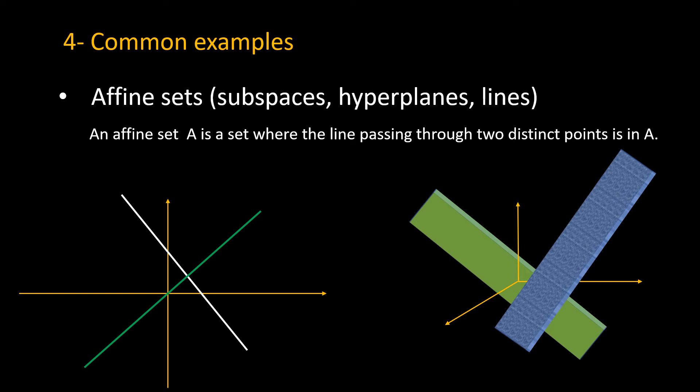However, I will explain an affine set very quickly. An affine set A is a set where the line passing through two distinct points is in A. Here this white line in R2 is an affine set because if you take two arbitrary points x and y, the line passing through x and y is in the set that we are exploring.